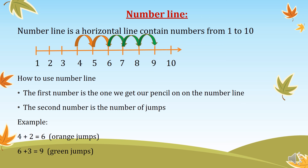For example, four plus two: four is the first number we place our pencil on, and two is the number of jumps. From four we jump two jumps — from four to five is the first jump, and from five to six is the second jump. Then four plus two is equal to six.